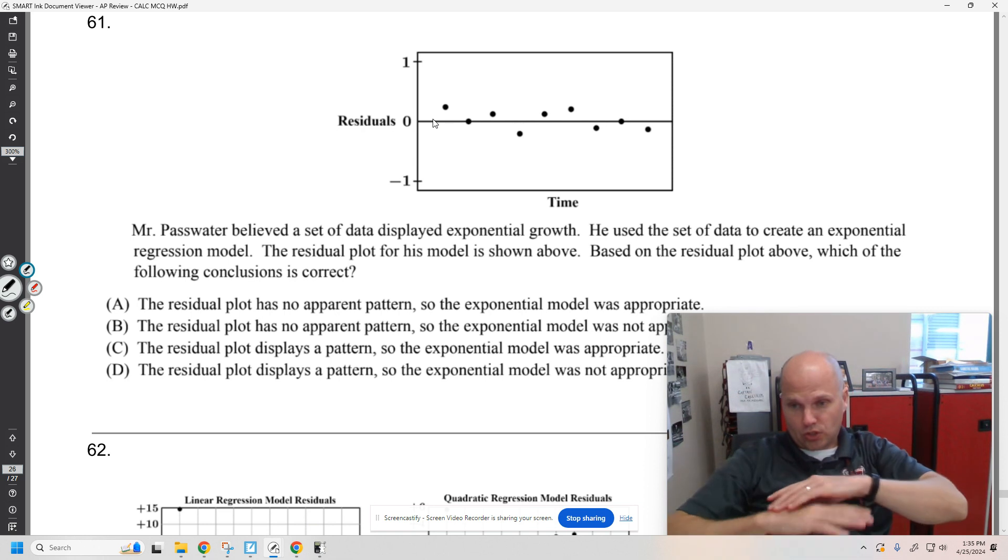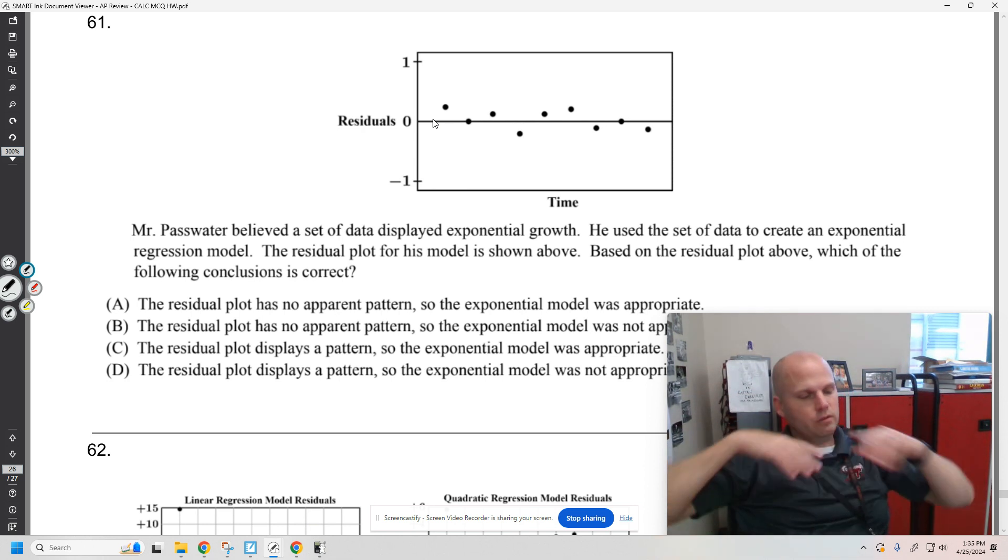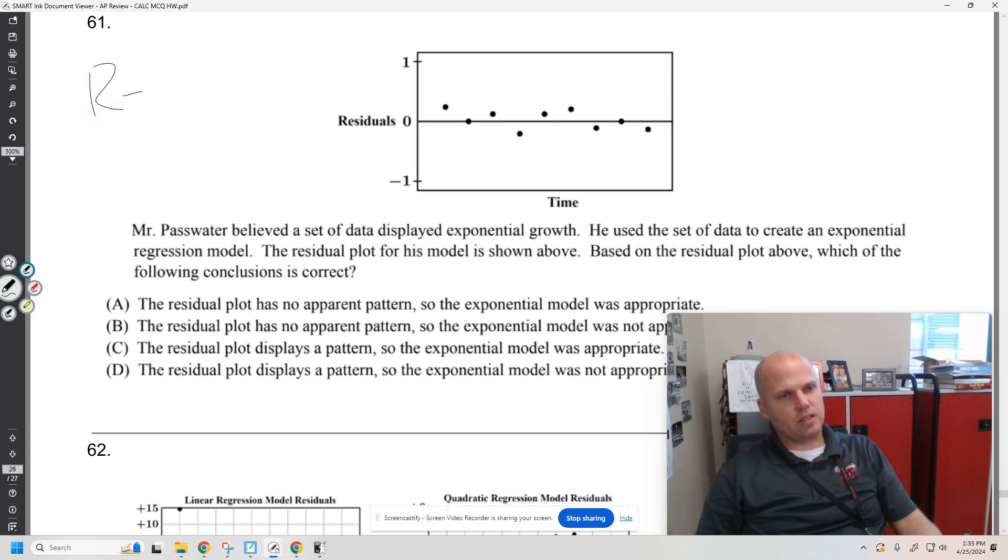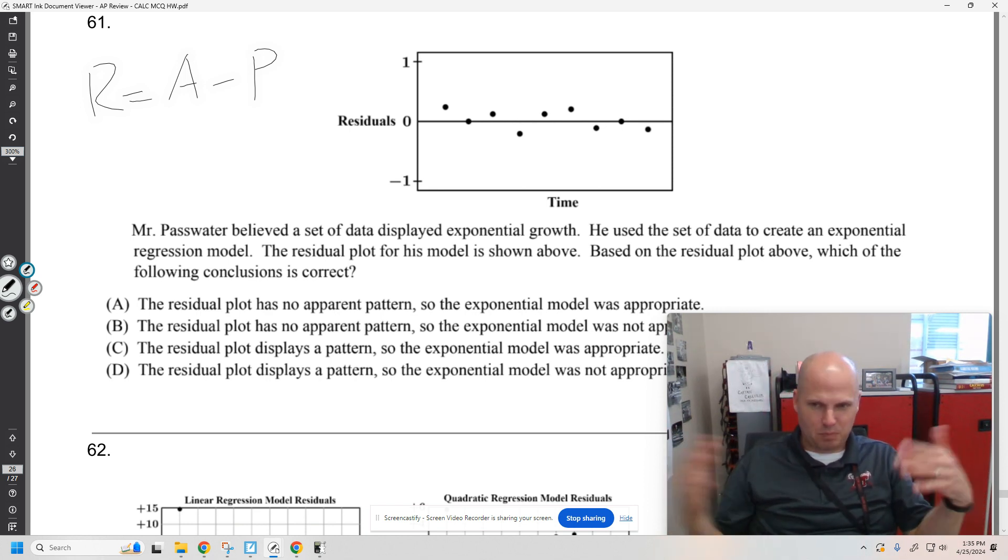Guys, when residuals are close to zero, your model is good. Residual is actual minus predicted. We just kind of talked about this. If your residuals are all zero, you have a pattern. However, if your residuals are all zero, your model is perfect. So, like, that's great.